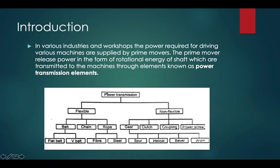Power transmission elements are classified into flexible elements and non-flexible elements. Flexible elements include belt, chain, and rope. Belt is classified into flat belt and V-belt, and rope is classified into fiber and steel, depending on the material used.